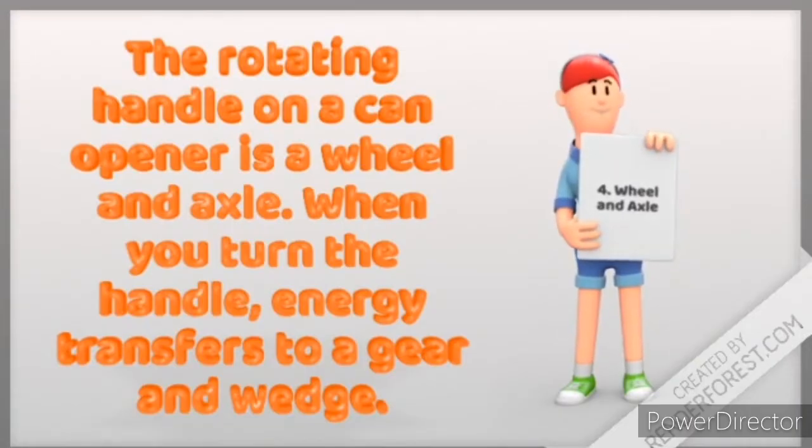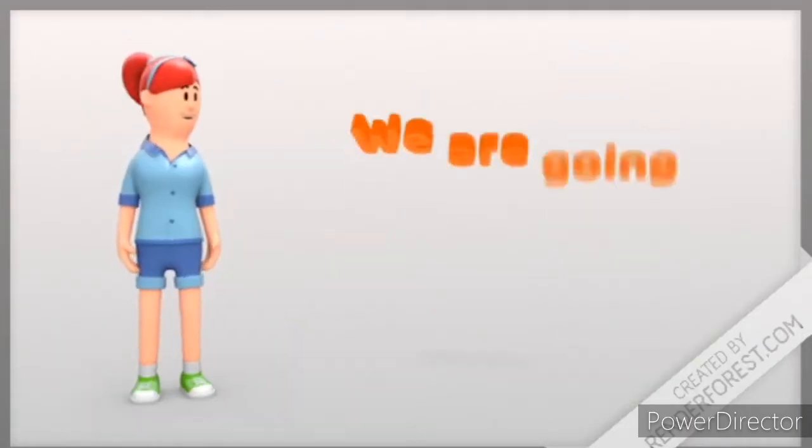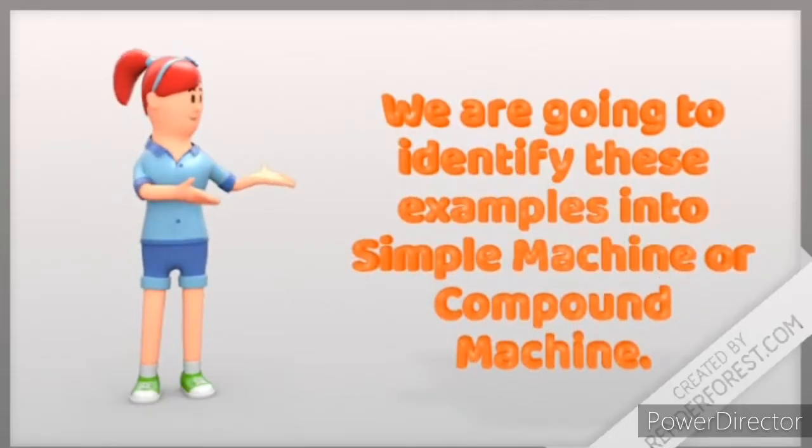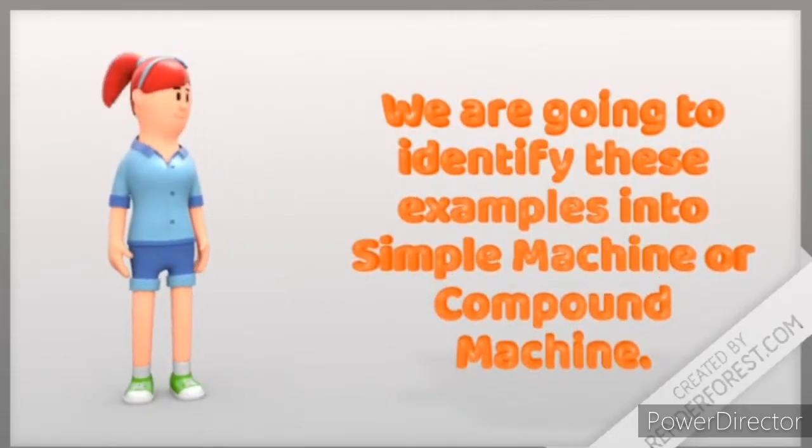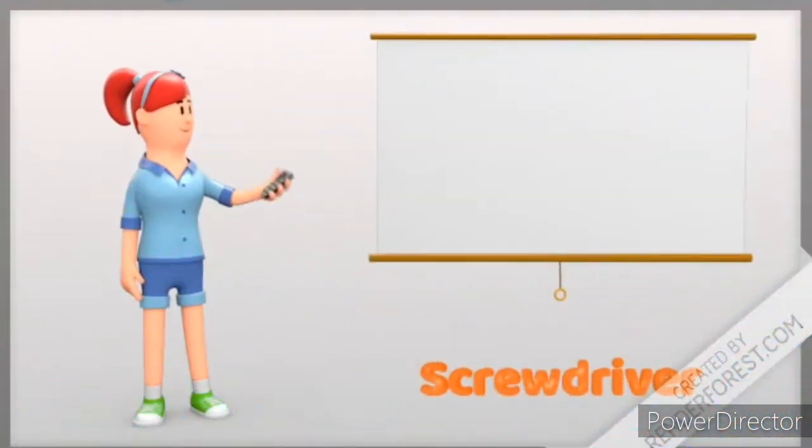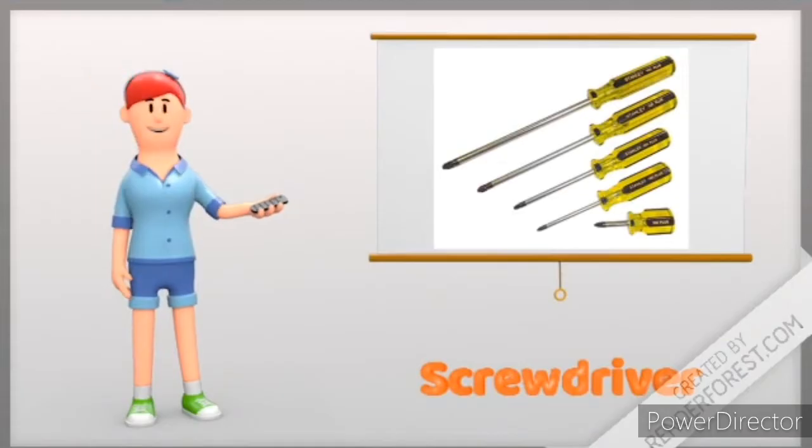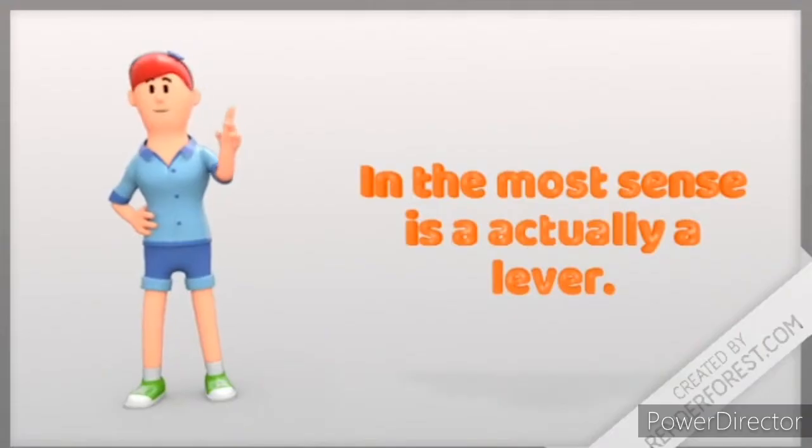Now, can you identify simple machines from a compound machine? We will try from the following examples. Number one, a screwdriver. A screwdriver in the truest sense is actually a lever.